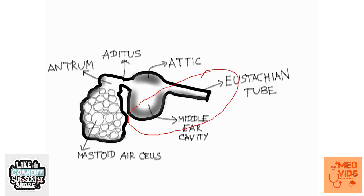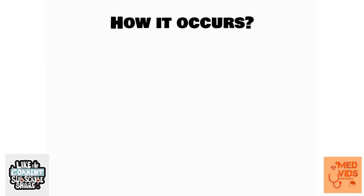The tubo-tympanic type involves the antero-inferior part of the middle ear cleft, which is lined by ciliated columnar epithelium. When infected, this epithelium gets activated and produces profuse secretions — that is the reason for profuse ear discharge in tubo-tympanic disease. The rest of the middle ear cleft is lined by squamous epithelium, which cannot produce much secretion, explaining the scanty discharge in aticoantral disease.